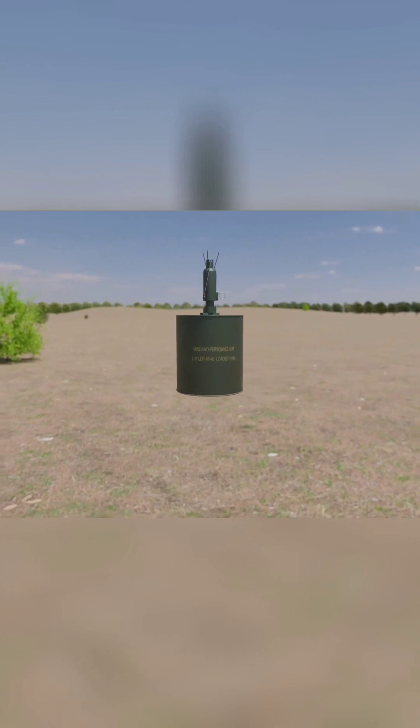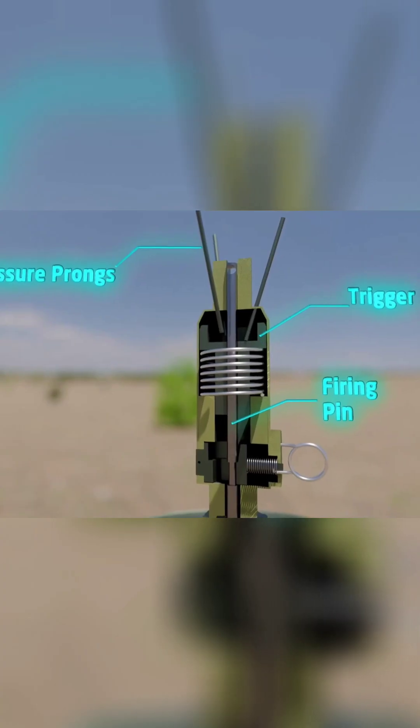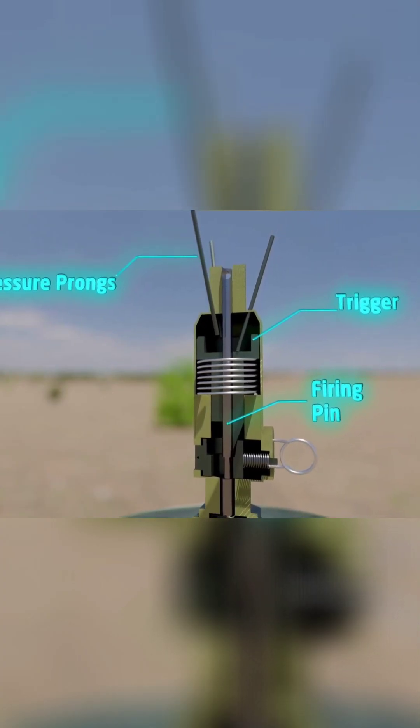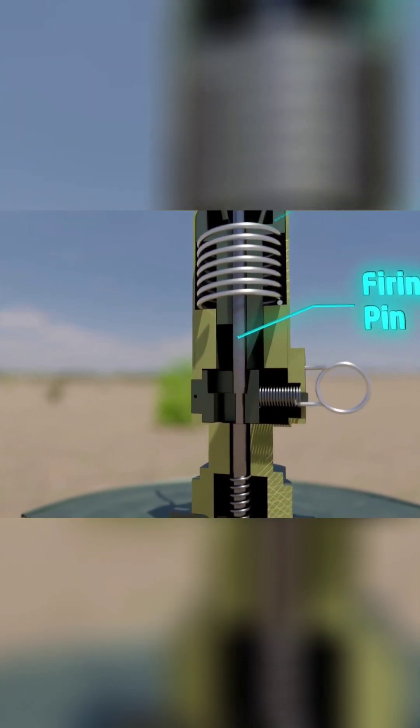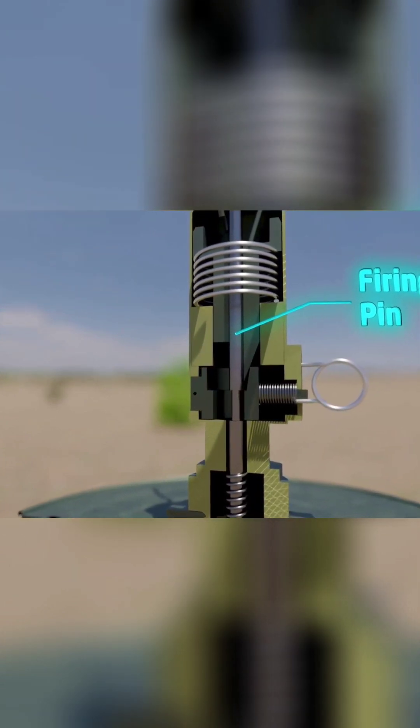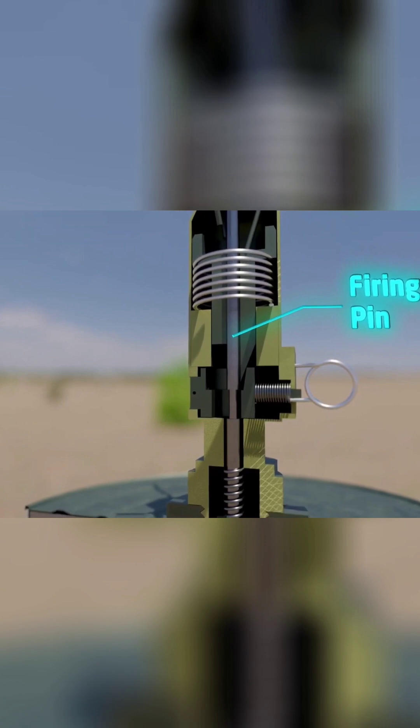This is M-16 antipersonnel landmine. Due to the wedge shape of the trigger, the release pin pushes outwards when pressure is applied to the pressure prongs. The striker is released and strikes the primer, which ignites a delay element.